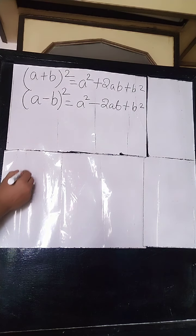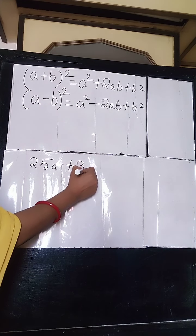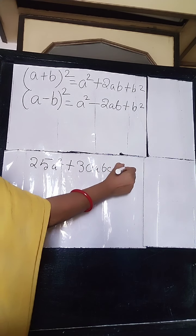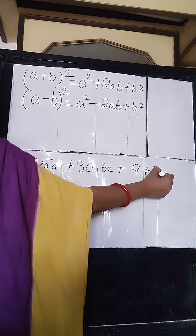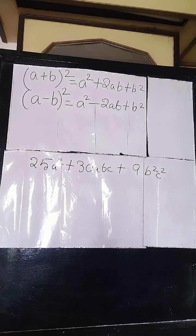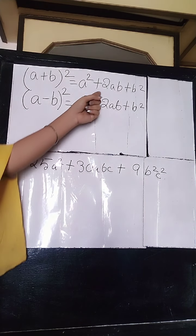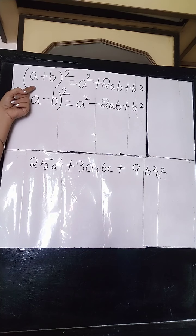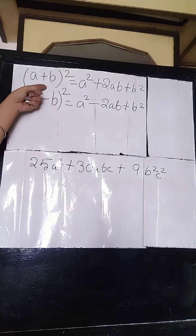Suppose a number is given like 25a squared plus 30abc plus 9b squared c squared. This sum is given to you and you are asked to express this as a perfect square. That means the derivation is given to you and you have to express it as the square of two terms — the square of a summation of two terms.